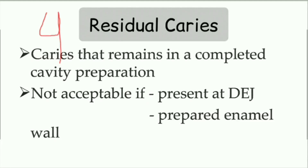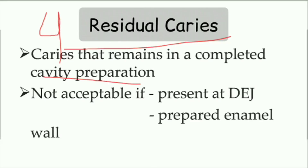We are seeing different types of caries over the last two videos. I have already explained pit and fissure caries and smooth surface caries. Now moving forward to residual caries. Residual caries is the caries that remains in a completed cavity preparation — when we prepare a cavity for restoration, some caries still remains there, and we call that residual caries.